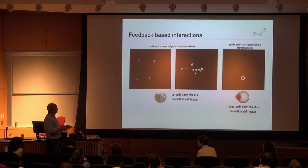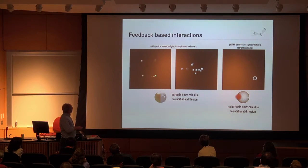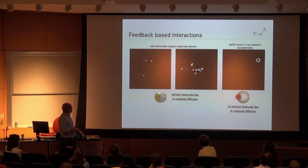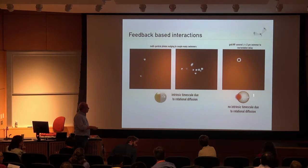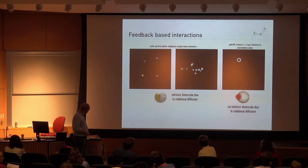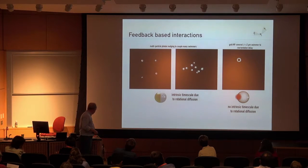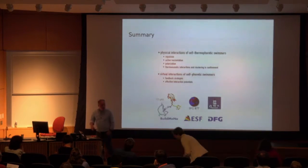We think this can be done for up to hundreds of particles. One disadvantage of Janus particles is the intrinsic time scale set by rotational diffusion, but you can get rid of that by using a symmetric particle heated on one side. With that, I think I'm done — thank you for your attention.